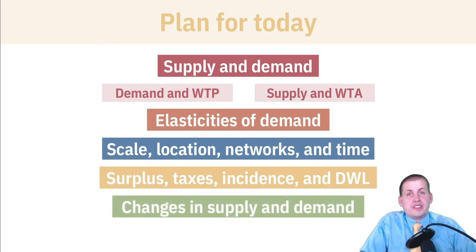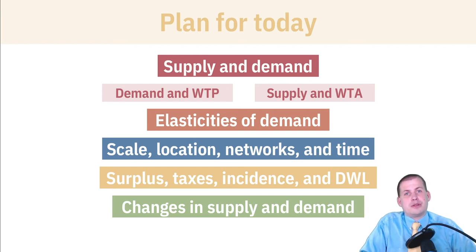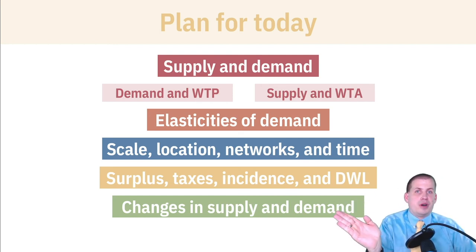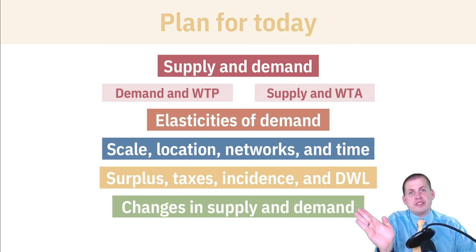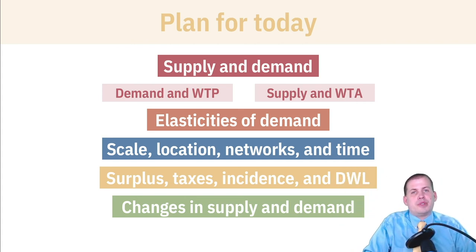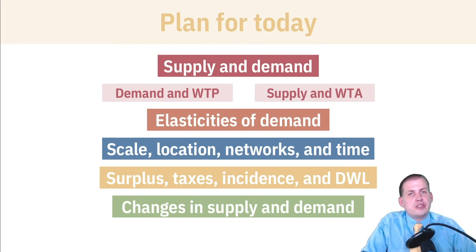Then we'll briefly talk about changes in supply and demand. Sometimes structural changes in a market — a new product being invented, or preferences shifting over time — cause shifts in markets that you can actually model. You can move a demand curve out or a supply curve down, and we'll talk about the consequences of those changes.